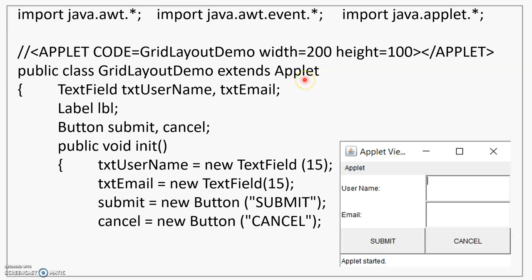Let's look at this program where we are using an applet as a container. We will create a GridLayout for it. There is one label, one text field, another label, another text field, and two buttons. Looking at the structure of this applet, there are three rows: one row with a label and a text field, a second row with a label and a text field, and a third row with two buttons. So there are three rows and two columns. In the first column, you will see two labels and one button; in the second column, two text fields and a button. To create such a layout, we use GridLayout with three rows and two columns.